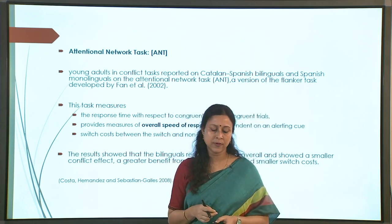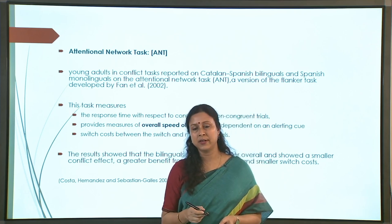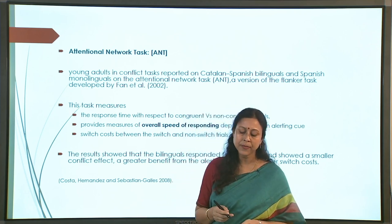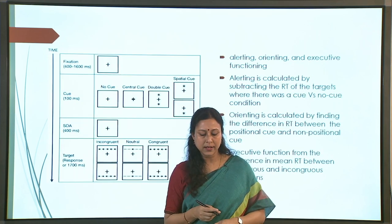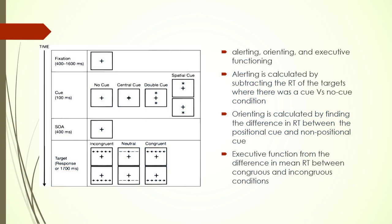Another task commonly used is the ANT, or Attentional Network Task - slightly more complex than Simon. In ANT, there will be cues. The screen appears with a fixation cross, then a cue may appear in the middle, as a double cue - both central and spatial - or as a single cue above or below the fixation cross. Sometimes there may be no cue. These are the possibilities for a cue appearing, followed by a target.